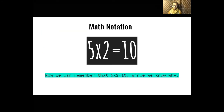Let's see what it looks like in math notation. This is how you write it: five times two equals ten. The x means times. You'll see it written a little bit differently as you move up in your math journey, but when you're first learning multiplication, there's an x. We want to remember this multiplication fact — five times two equals ten — since now we know why it works.